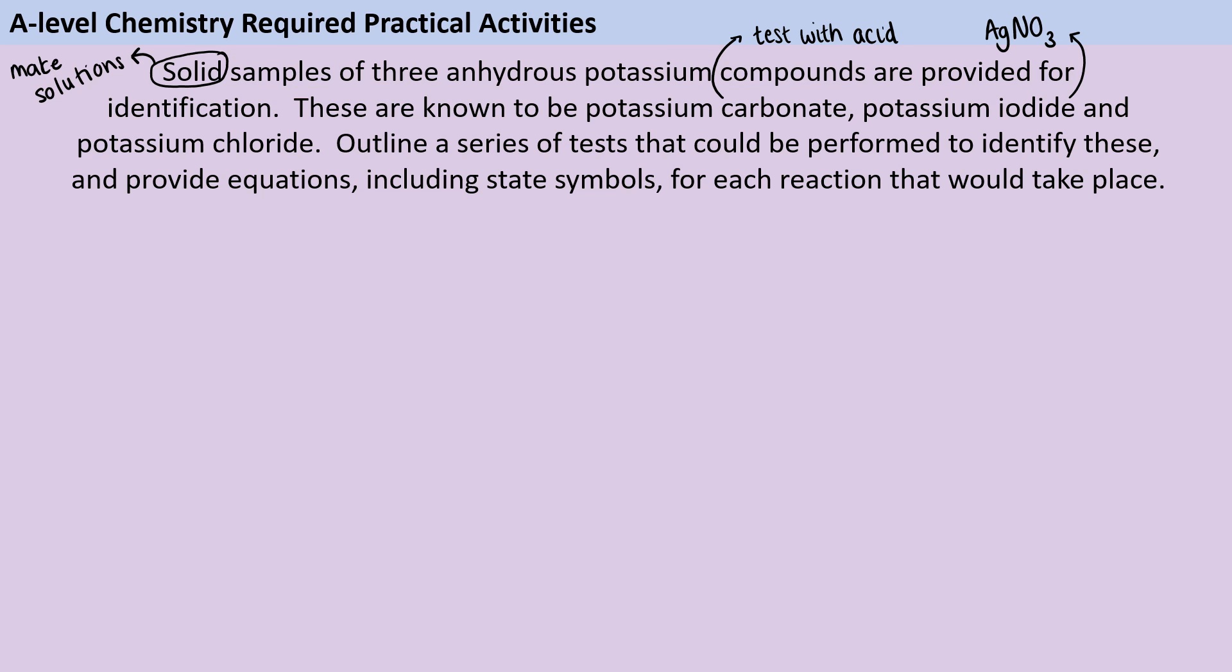They've asked in the question for us to outline a series of tests. So not just some independent different tests, but we need to put them together in a logical order. So we're going to start off by testing the solid samples using acid to see whether they contain carbonate ions. And we need to think carefully about which acid we're going to use because they've said that they want a series of tests. So whichever acid we're using, it can't interfere with the results of the halide test later. So we obviously can't use hydrochloric acid because that would contain chloride ions, which would definitely interfere with the results of that test.